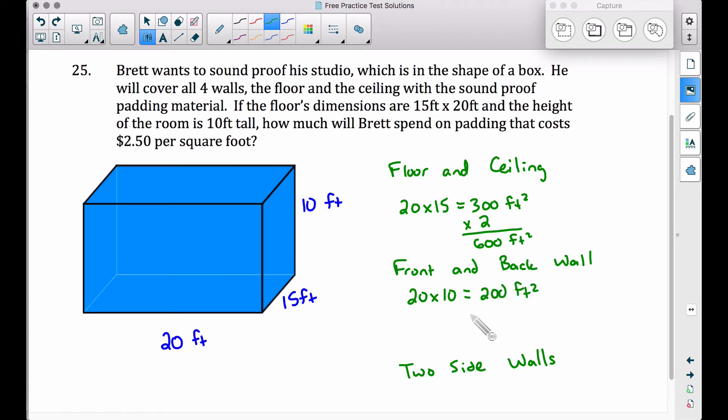But again, since the back wall is the same, very similar to the floor and the ceiling, we need to double this. Front wall and back wall for an area of 400 square feet.